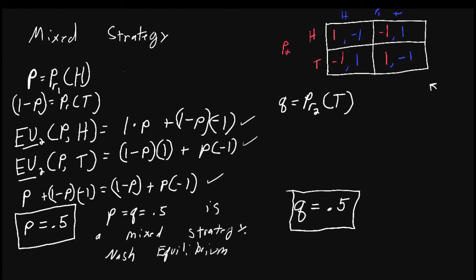To review: a mixed strategy Nash equilibrium is a probability distribution for each player over all of its actions such that it cannot do better by changing that probability. We use the result that says for a player to be willing to randomize, it must be indifferent between all actions that it randomizes among. In the next lesson, we're going to dig into this a little bit more to see why the mixed strategy is not quite as intuitive as the pure strategy Nash equilibrium.